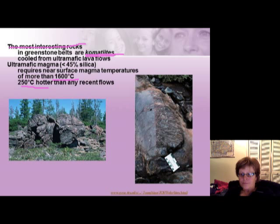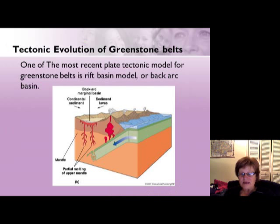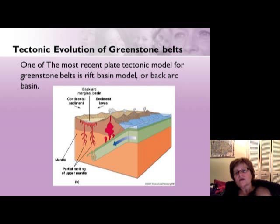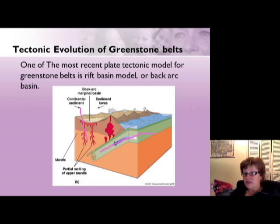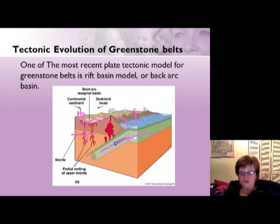There is a tectonic evolution model for how greenstone belts formed. Scientists believe they could have formed in two ways: the rift basin model, or the oceanic convergent plate boundary model. Graywacke is a very immature sedimentary rock — in a rift basin, sediment comes from surrounding mountains; in a back-arc basin, sediment comes from volcanoes. It is actually quite hard to separate these two models, especially when you have the same type of volcano in both settings, so both models are plausible.